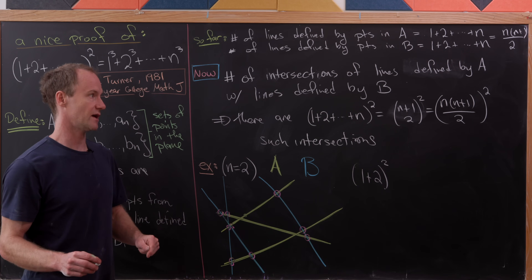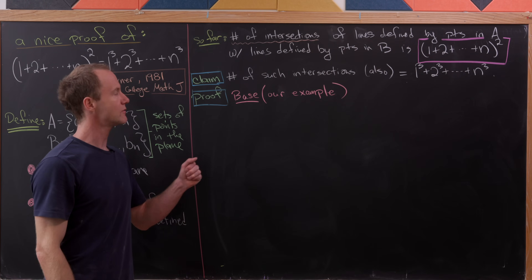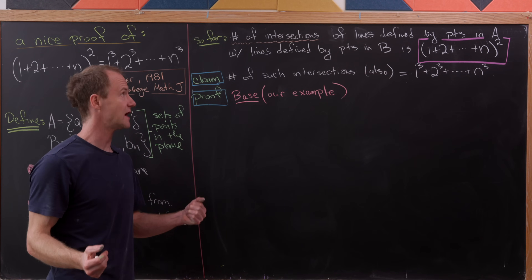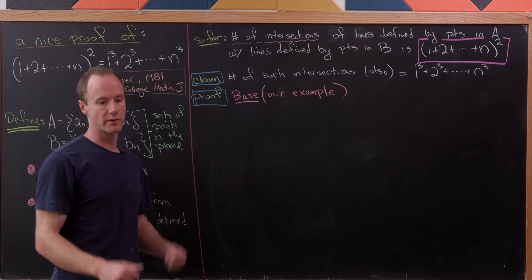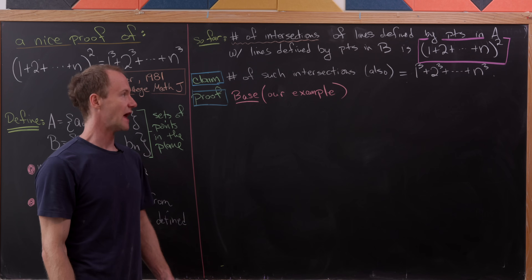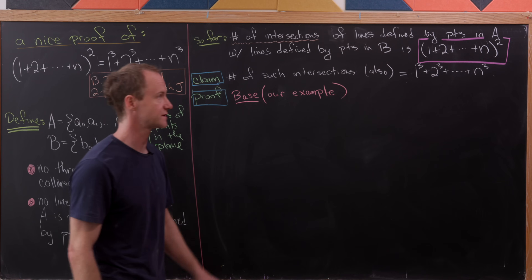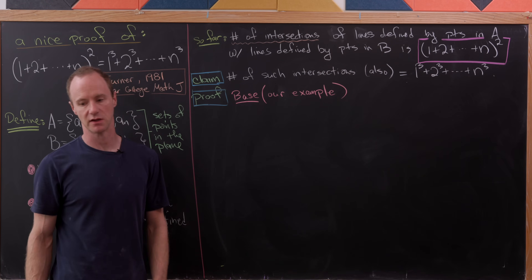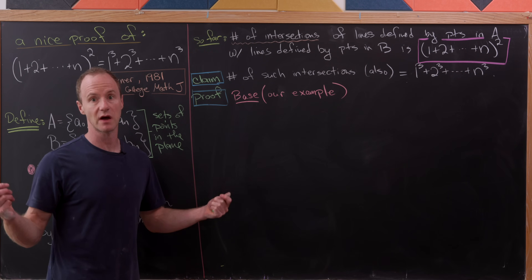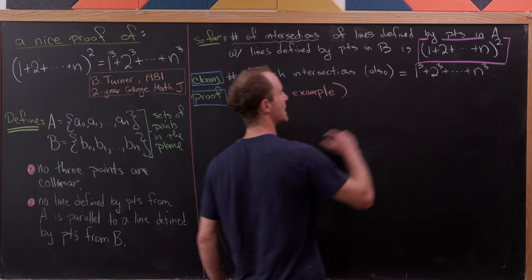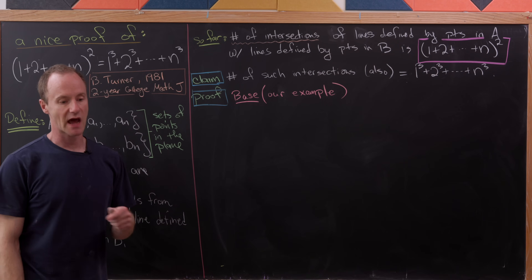Now that we've counted these intersections one way, we're going to count them another way, and that will build our final formula. We've shown the number of intersections equals one plus two plus three all the way up to n, squared. Now we'll show it also equals one cubed plus two cubed all the way up to n cubed. Since we're counting the same thing two ways, those two expressions must be equal — which is exactly what we want to show.